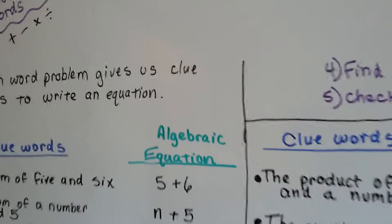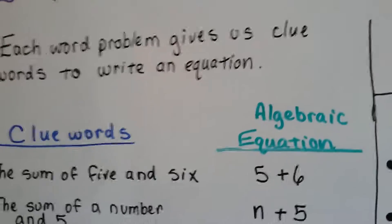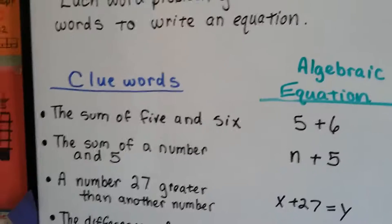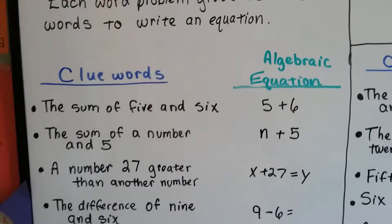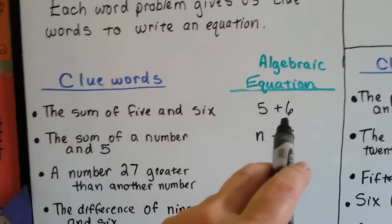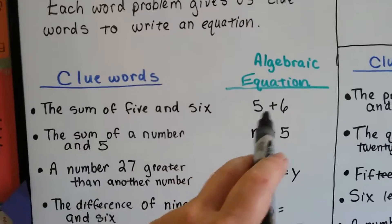So each word problem gives us clue words to write an equation. If you see clue words like the sum of 5 and 6, that means 5 plus 6. It's the sum, so we know it's addition.